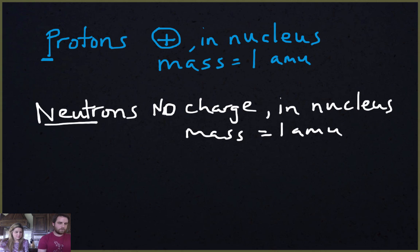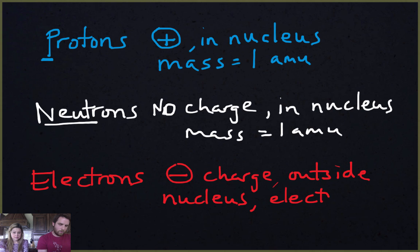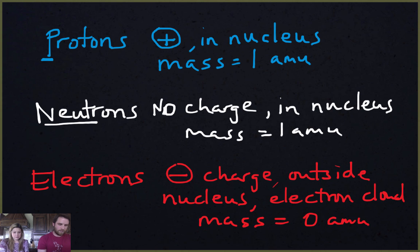So all the mass seems to be in the nucleus right now, and it's going to be positively charged because all we have there is protons and neutrons. Then we have electrons. Electrons are negatively charged. They are outside the nucleus in the electron cloud where all that empty space is, and they have essentially zero mass — it's so tiny it's negligible.